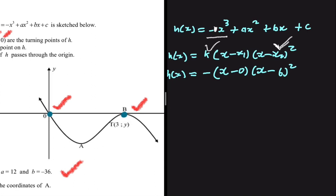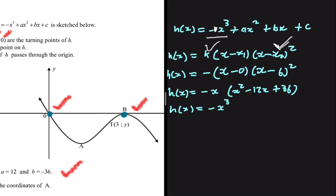Now we expand: h(x) equals minus x multiplied by (x minus 6) squared. Expanding (x minus 6) squared: x squared minus 6x times 2 gives minus 12x, and minus 6 times minus 6 gives plus 36. So h(x) equals minus x to the power 3 plus 12x squared minus 36x.